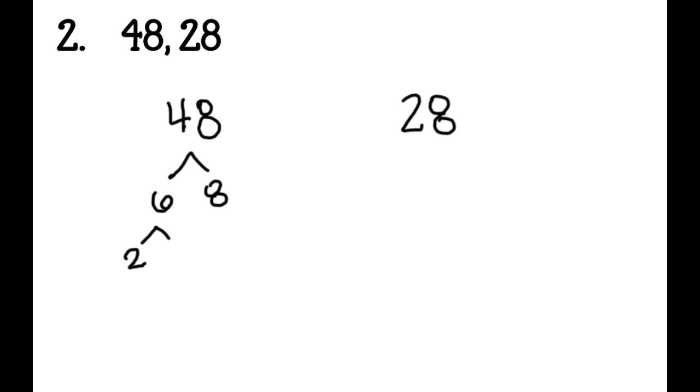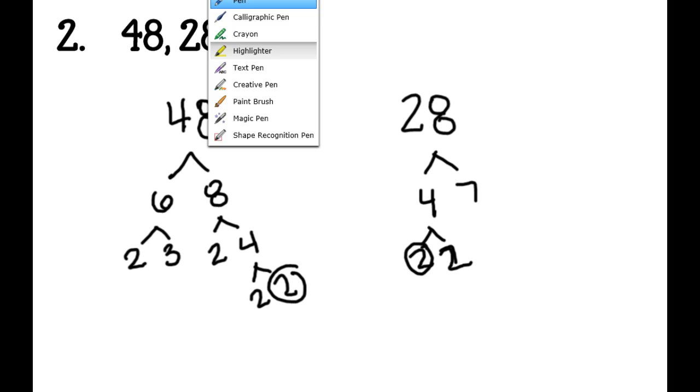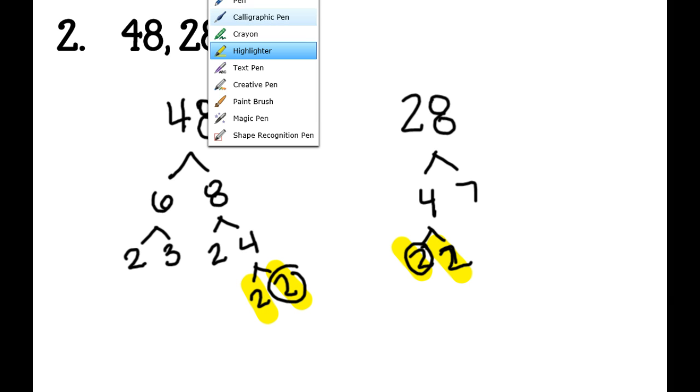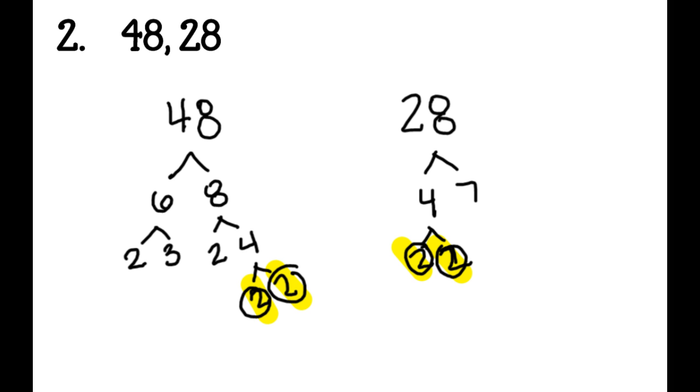Six is two and three. Eight would be two and four. And then four can still go further, which is two and two. So the prime factors of 48 are two, two, two, three, and two. Then 28 is four and seven. And then four can go two and two. So I look at what do they have in common. They have a two in common. They have another two in common. And that's it. They don't have a seven in common because this one doesn't have a seven. So they have two twos. So that is a four is their GCF. I get that by taking the two times two to get their GCF of four.